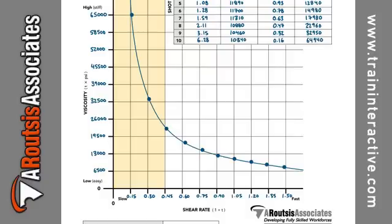Once most of the shear thinning occurs, the polymer's viscosity starts to level out. After this point, the viscosity will remain relatively consistent, resulting in a more stable process. For this reason, you should process on the right-hand side of the curve.